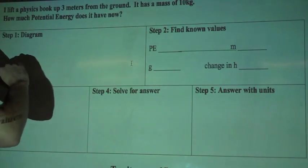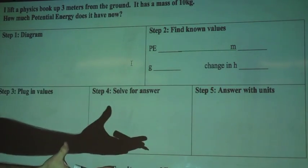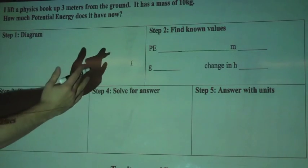So first off, I read the question: I lift a physics book up 3 meters from the ground, it has a mass of 10 kilograms, how much potential energy does it have now?